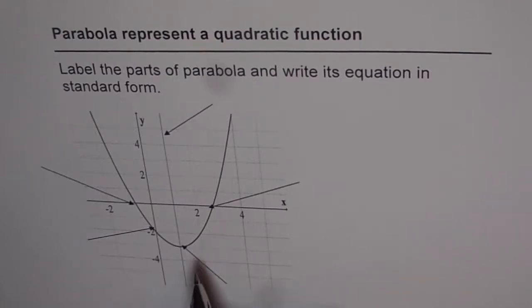As you see, labeling is kind of simple. This is a vertex and then we have y-intercept. These are the x-intercepts and we also call them zeros. And this line is axis of symmetry.